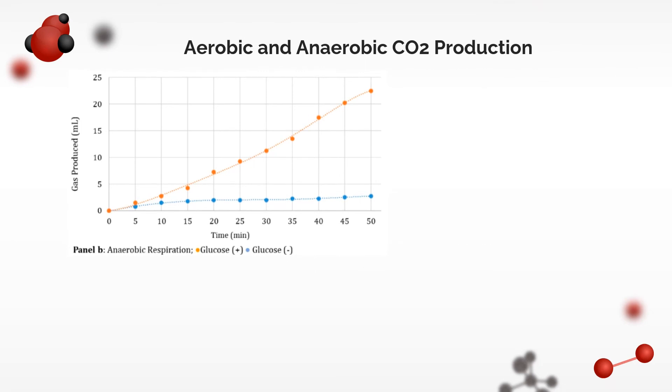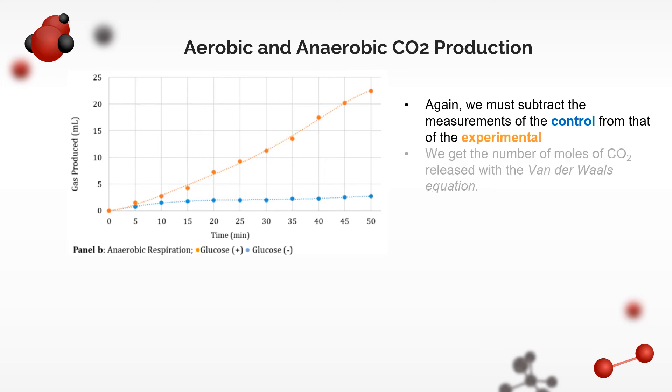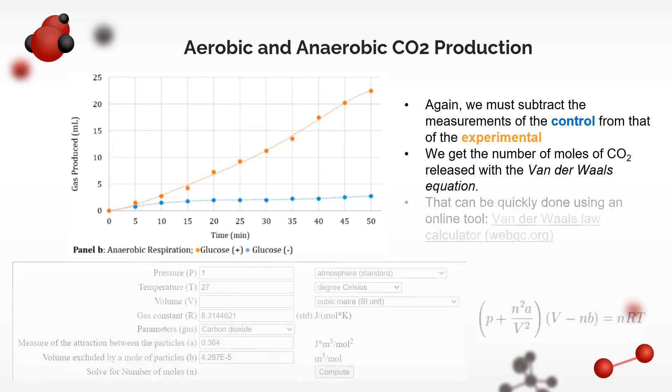For anaerobic setup, we are seeing an increase in volume of water displaced, which is the volume of CO2 produced. Again, we subtract measurements of control from experimental to differentiate volume change due to CO2 and due to H2O plus other gases. We get the number of moles of CO2 using the Van der Waals law, which we can do using an online software.